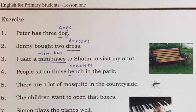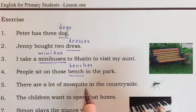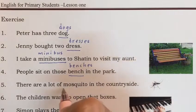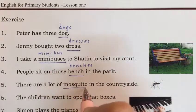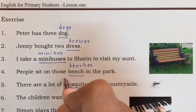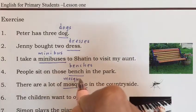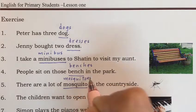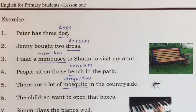Number five. There are a lot of mosquitoes in the countryside. Mosquito — it's a lot of, so we add -es. There are a lot of mosquitoes in the countryside.